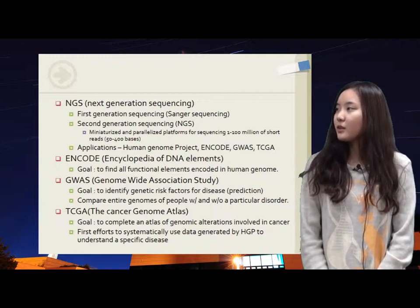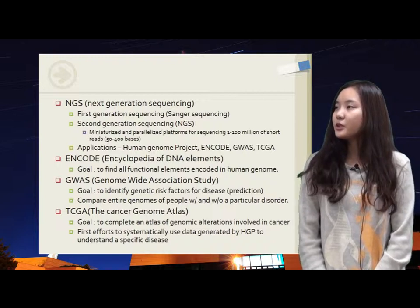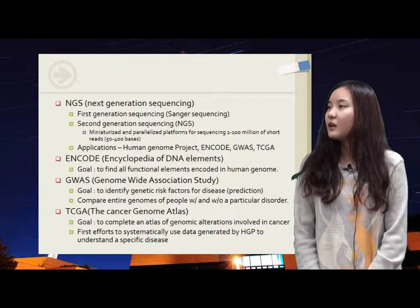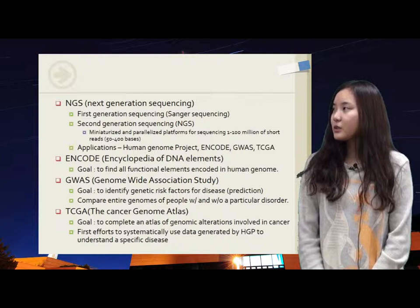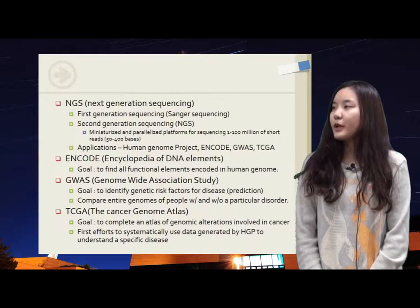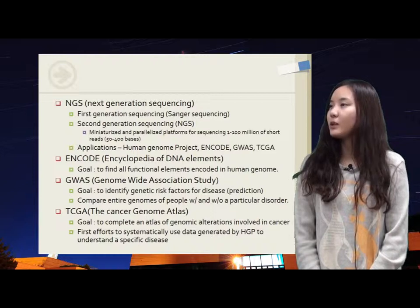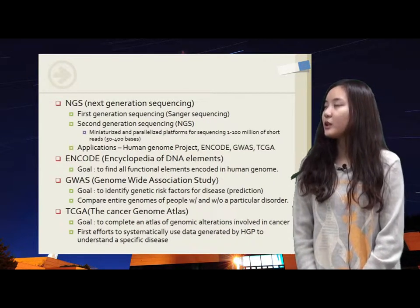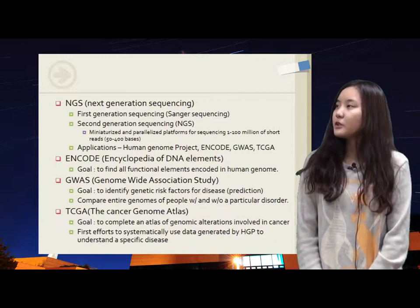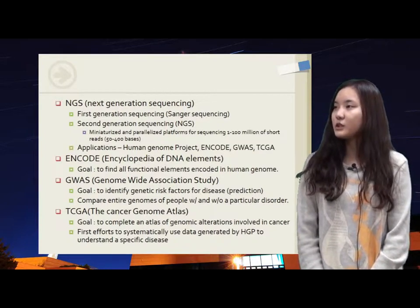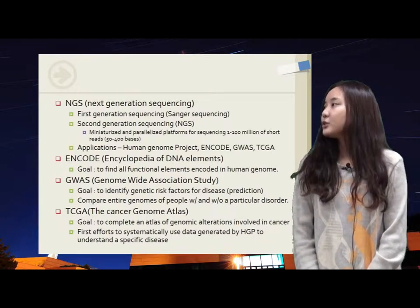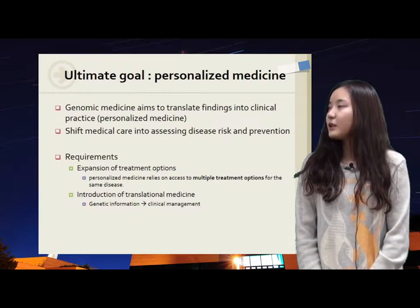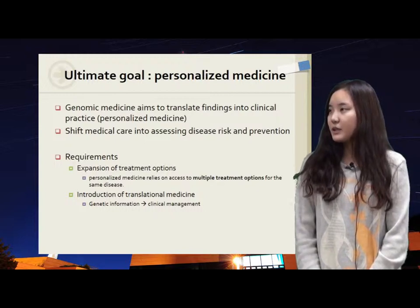ENCODE aims to find all functional elements encoded in the human genome, including genomes transcribed into non-coding RNA. The goal of GWAS is to identify genetic risk factors for disease by comparing entire genomes of people with and without a particular disease. TCGA aims to complete the atlas of genomic alterations involved in cancer — the first effort to systematically use human genome project data to understand a specific disease. To sum up, genomic medicine aims to translate findings into clinical practice, meaning personalized medicine.